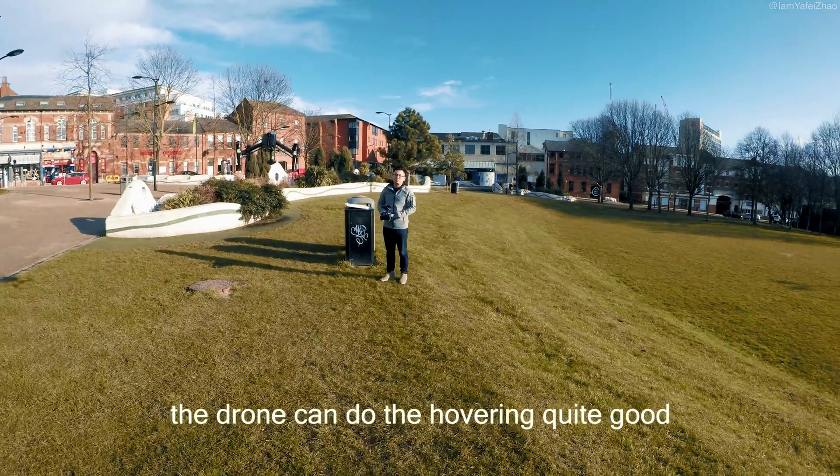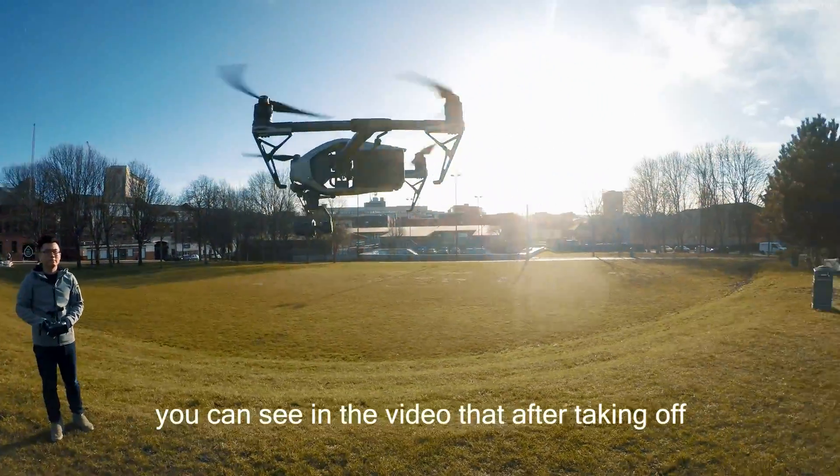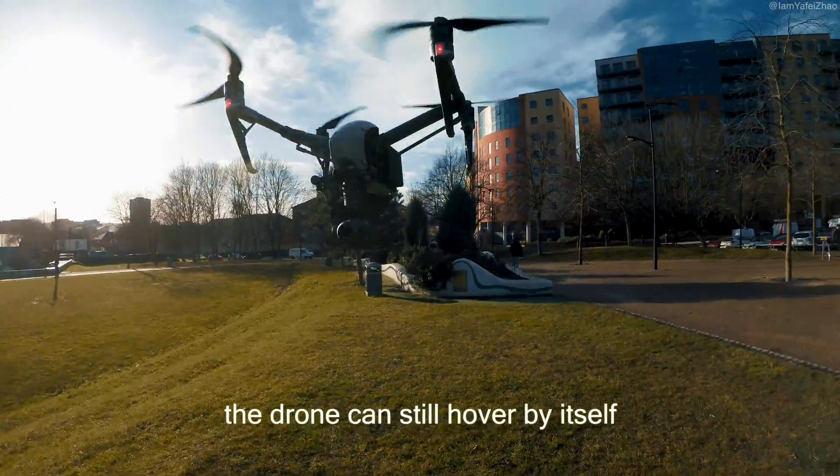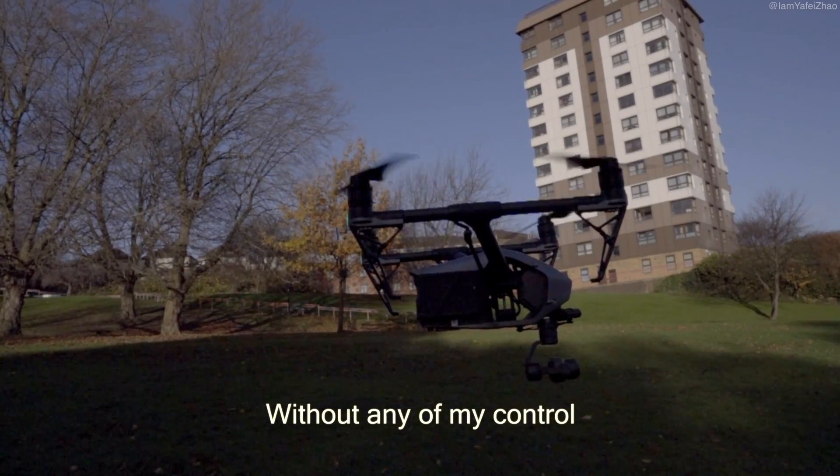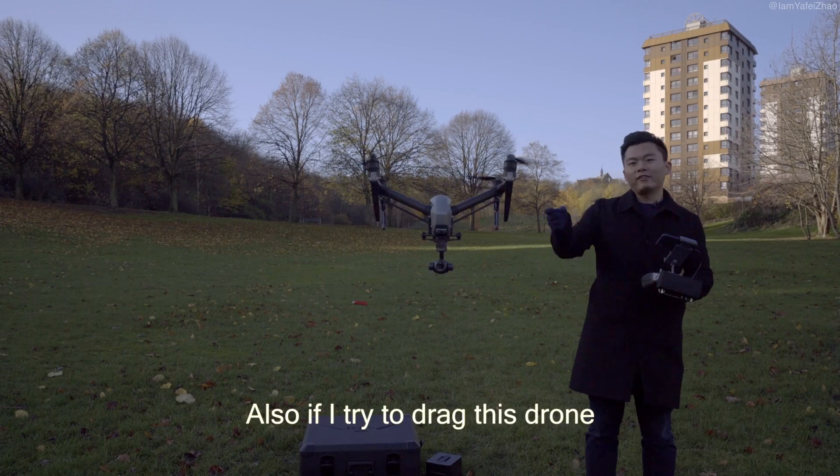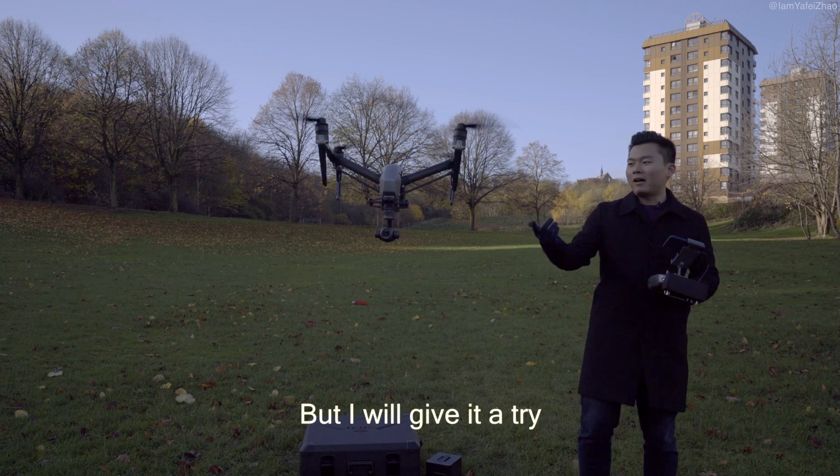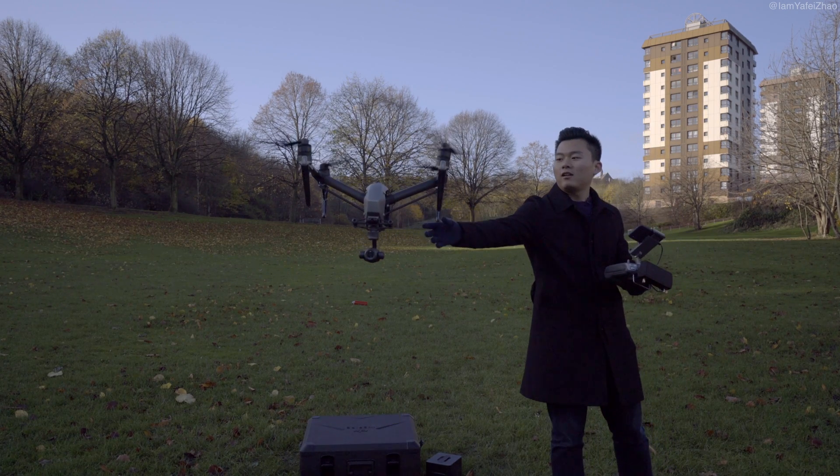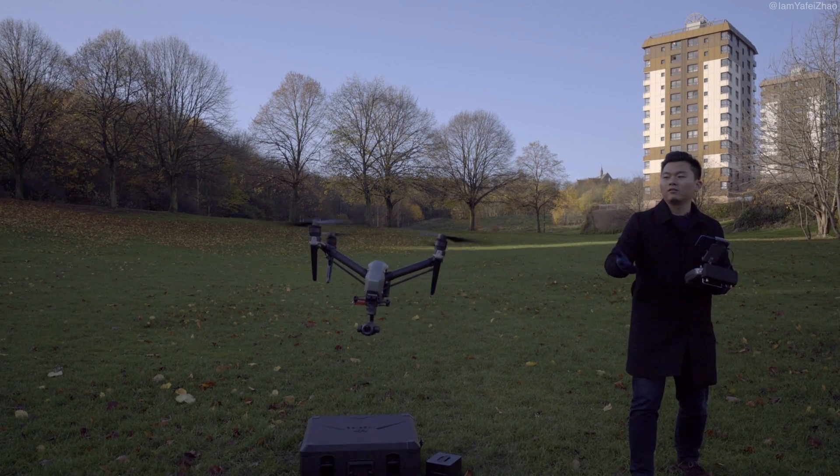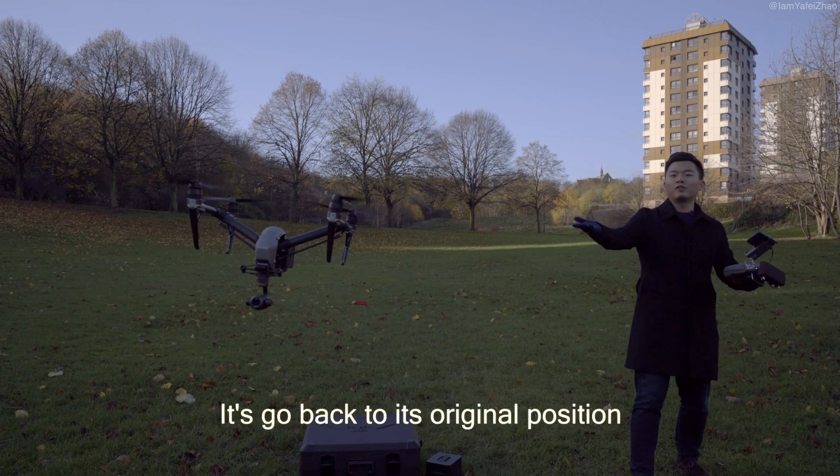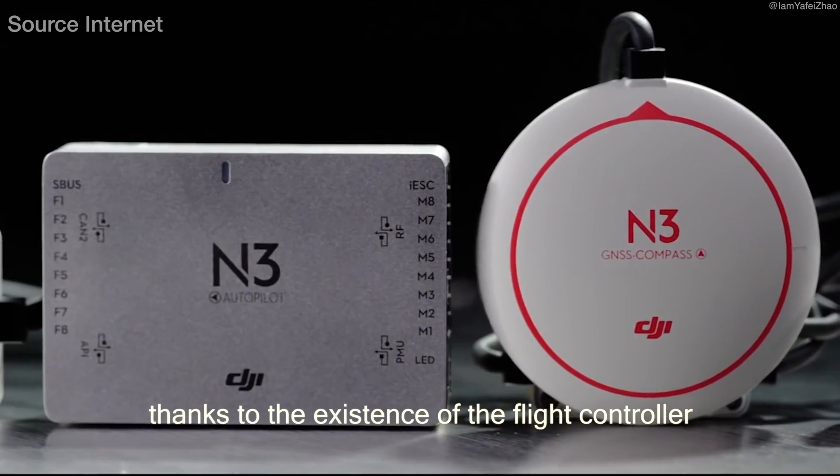As a contrast, the drone can do the hovering quite good, actually very good. You can see in the video that after taking off, without my control, the drone can still hover by itself. This one is hovering by itself without any control, and very stable. Also, if I try to drag this drone, it should be able to return back to its position. Look, it goes back to its original position. This can be done thanks to the existence of the flight controller.